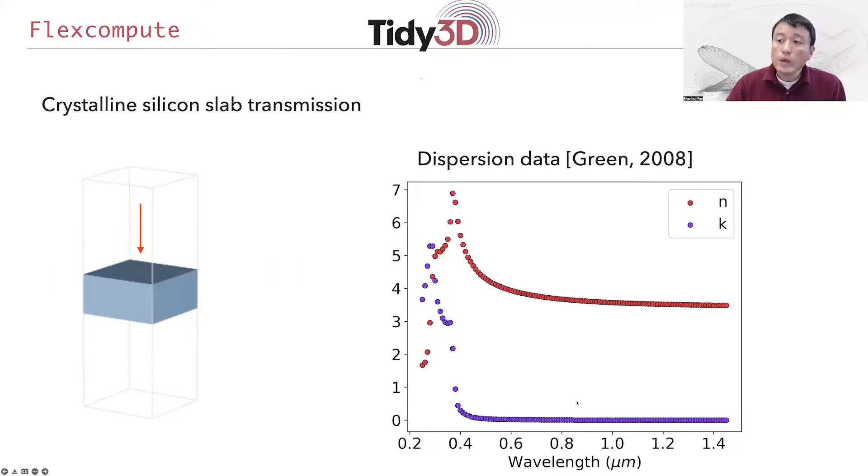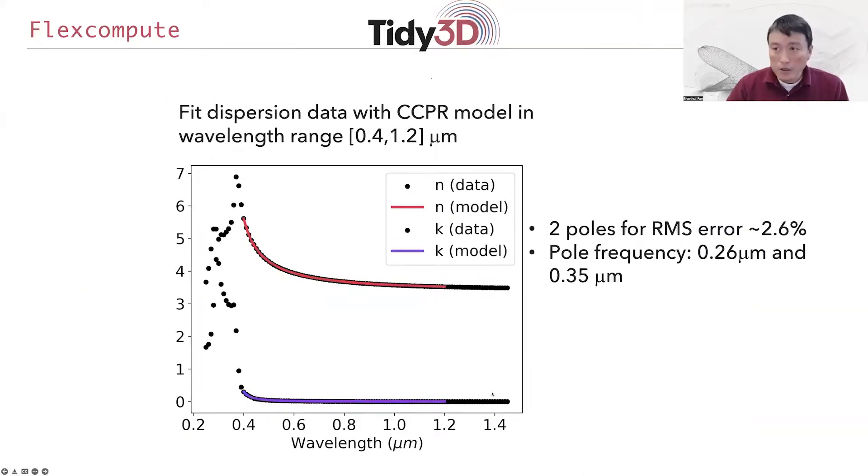In this case, what you would need to do is to use the pole-residue pair method that I've described and to fit these tabulated data with this model. So as it turns out, for example, for silicon, if you are interested in modeling the behavior of this material in the wavelength range spanning from 400 nanometers to 1.2 microns, which is the wavelength range approximately above the silicon band gap, and so where the silicon is non-absorbing, in this case, only two poles of this kind of pole-residue pair model is sufficient to give a very good modeling.